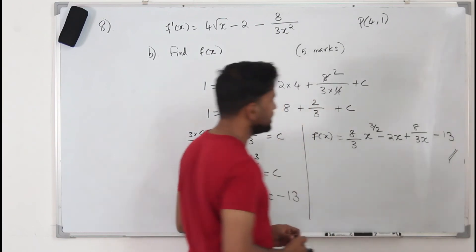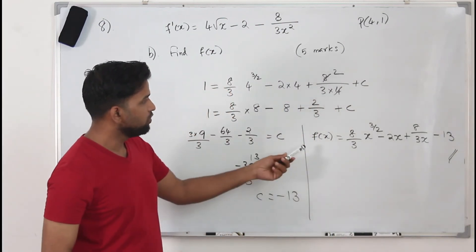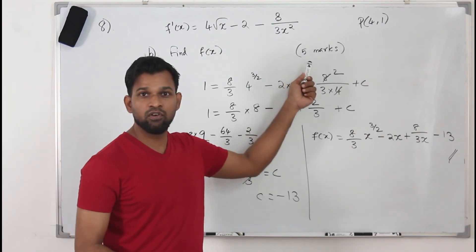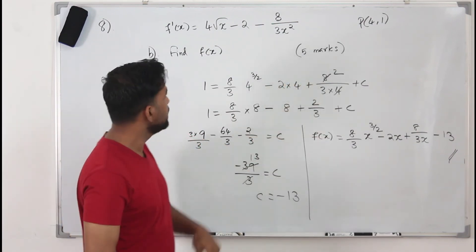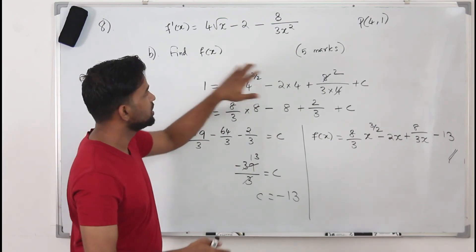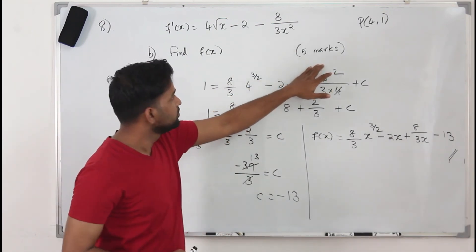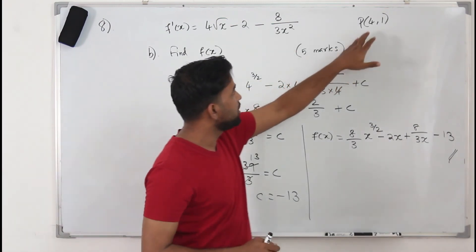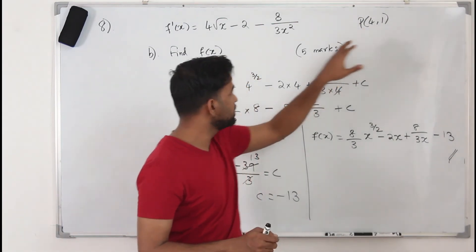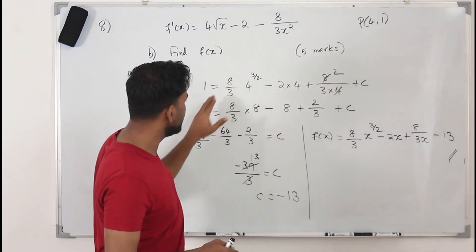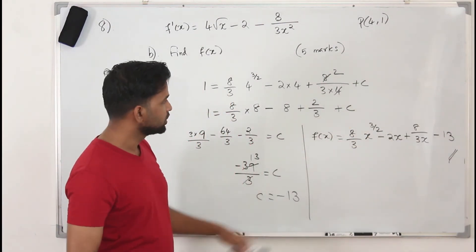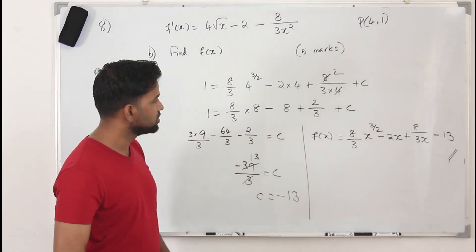This is the solution. If you leave it without finding c, you don't get the full 5 marks. The tricky part is: you are given the point P(4,1), you must substitute the point to find c, then substitute c back into the function. That way you get the full 5 marks.